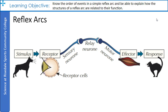The passage of information in a reflex from receptor to effector is called a reflex arc. The neurons in a reflex arc go through the spinal cord or through an unconscious part of the brain. Here are the main stages: when a stimulus is detected by receptors, impulses are sent along a sensory neuron to a relay neuron in the central nervous system. When the impulse reaches the synapse between the sensory neuron and the relay neuron, chemicals are triggered and released, causing impulses to be sent along the relay neuron. When the impulse reaches the synapse between the relay neuron and a motor neuron, the same thing happens.